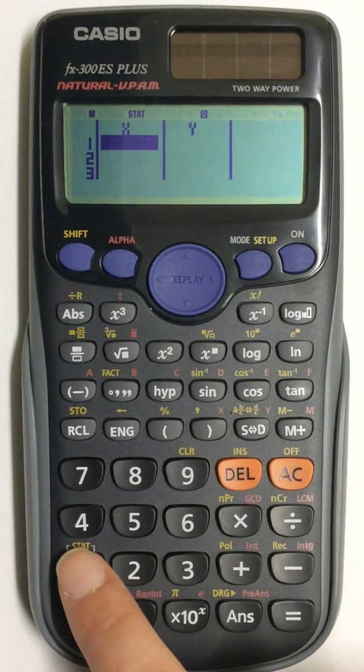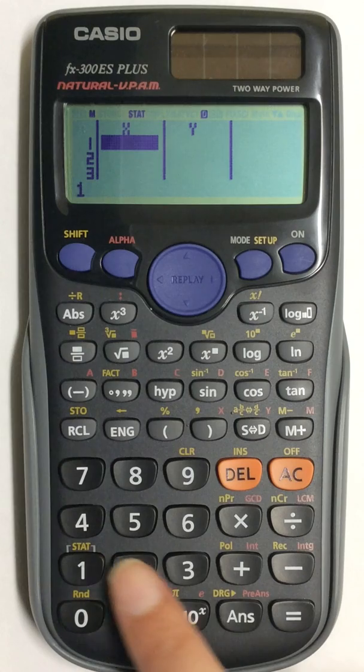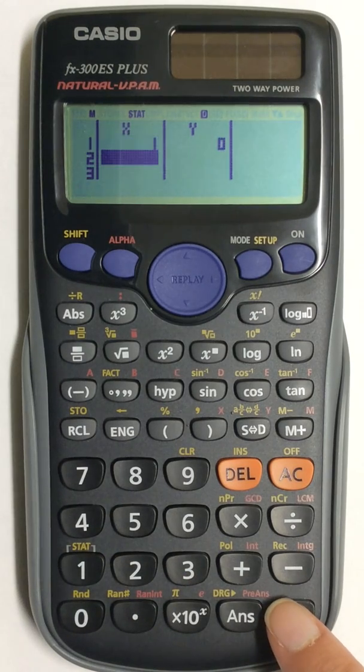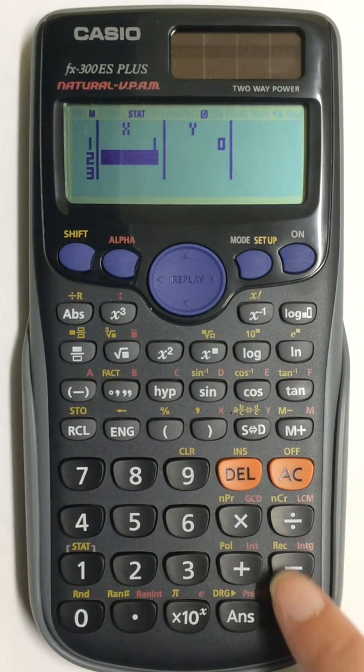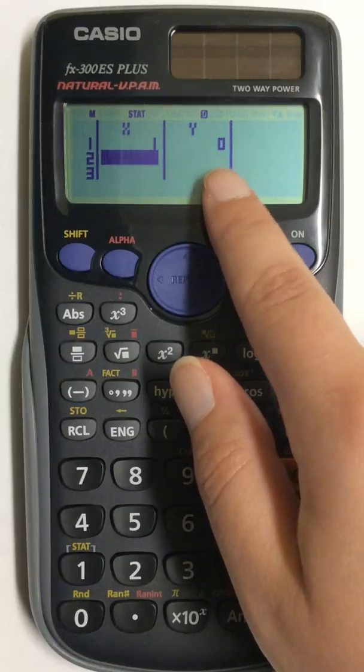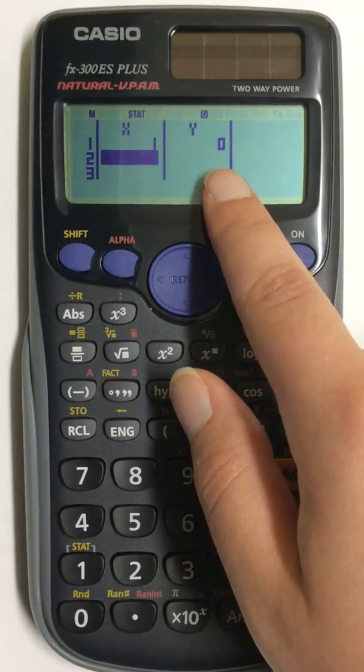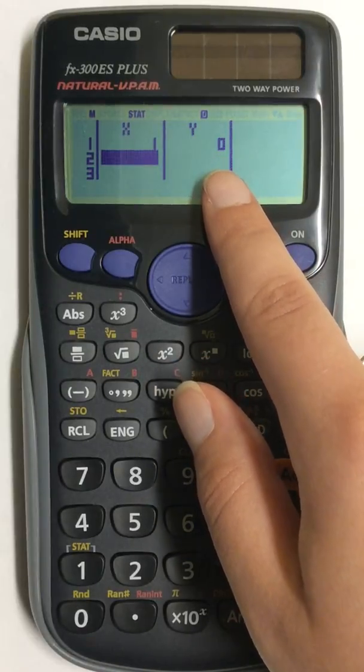I first enter in a number and press equals. Now, a value for Y will automatically come up as 0. To change that,